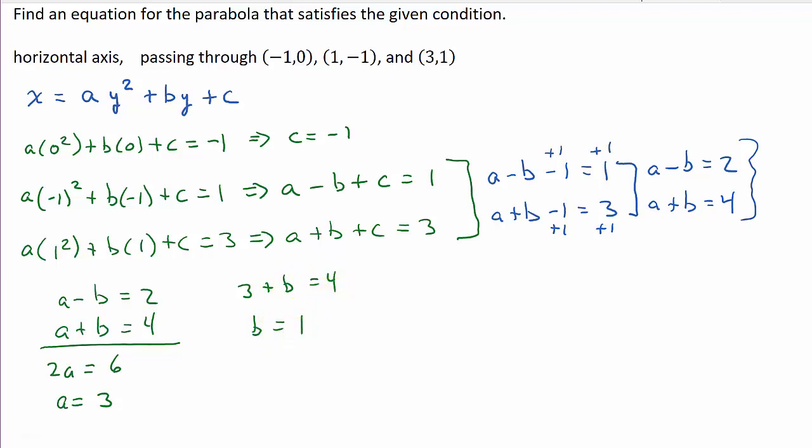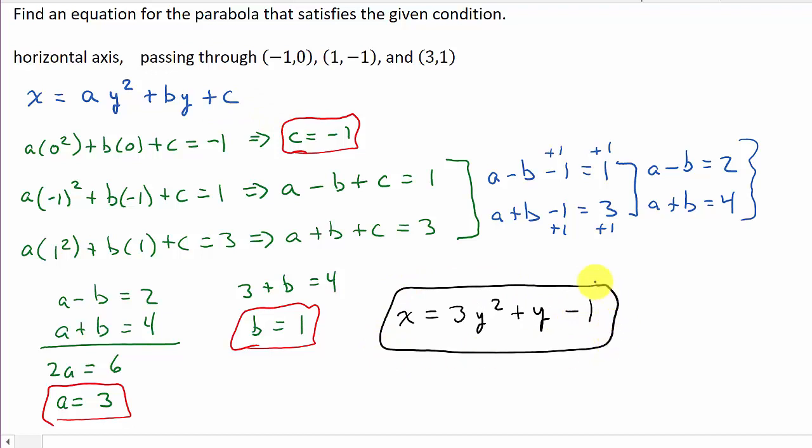And so you can see here, I've got c is negative 1, b is 1, and a is 3. So now plugging that back into here, I get x is equal to a, which is 3, so that's 3y squared. b is 1, so 1 times y is just y. And then c is negative 1, so minus 1. And there's your answer.